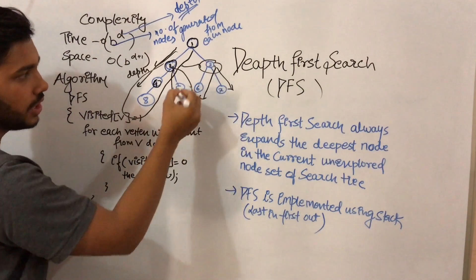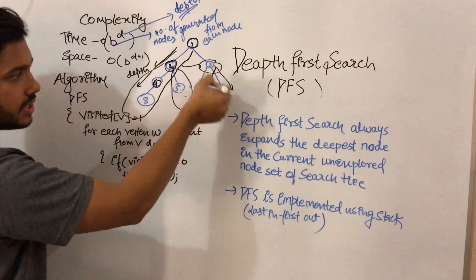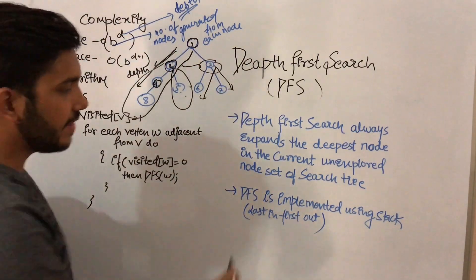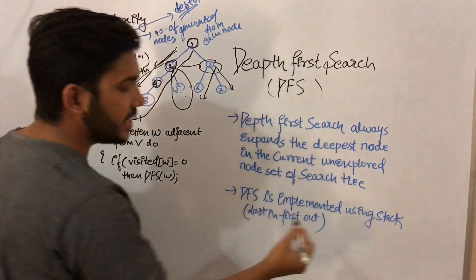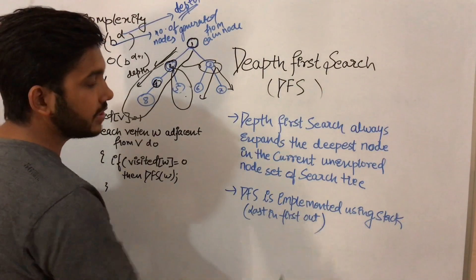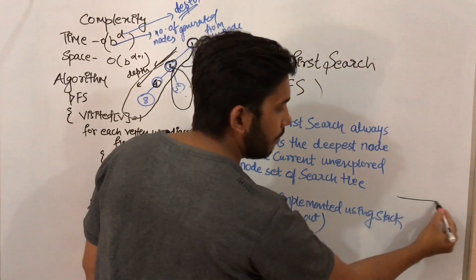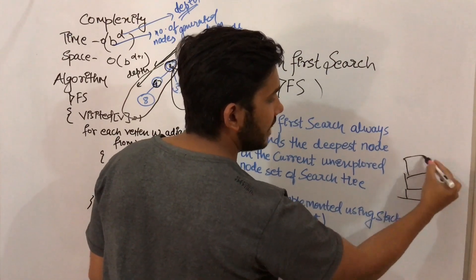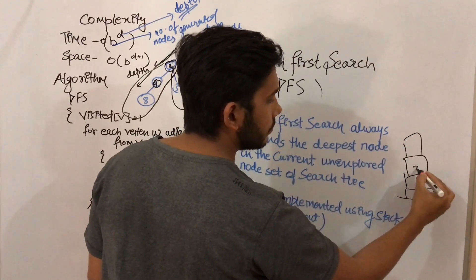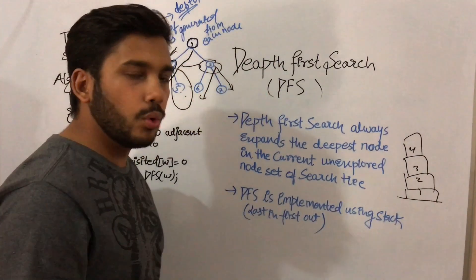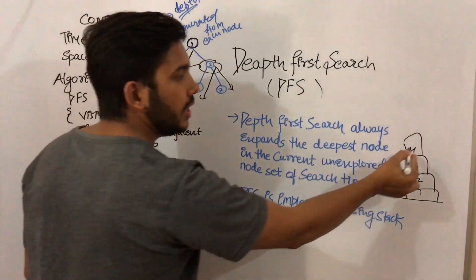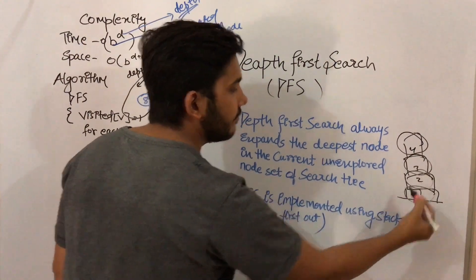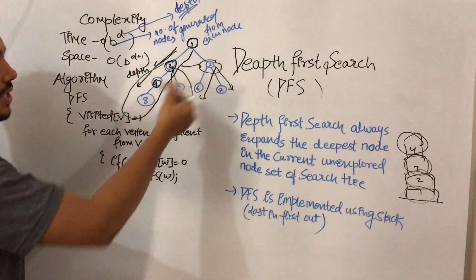Depth first search is implemented using a stack, which is last in first out. It is just like keeping books: if you place the first book, then second, third, and fourth, when you want to read them you pick the fourth first, then third, then second, then first.